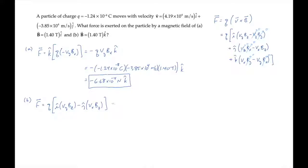We can again substitute all the values we were given to find the magnetic force in part B has components in the x and y direction. They're both positive and their values are given here.